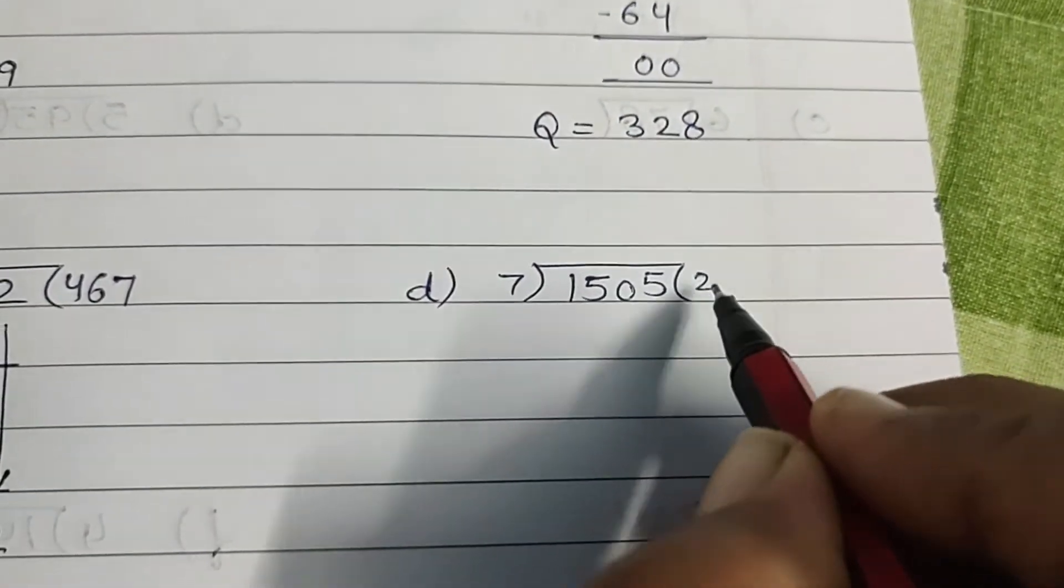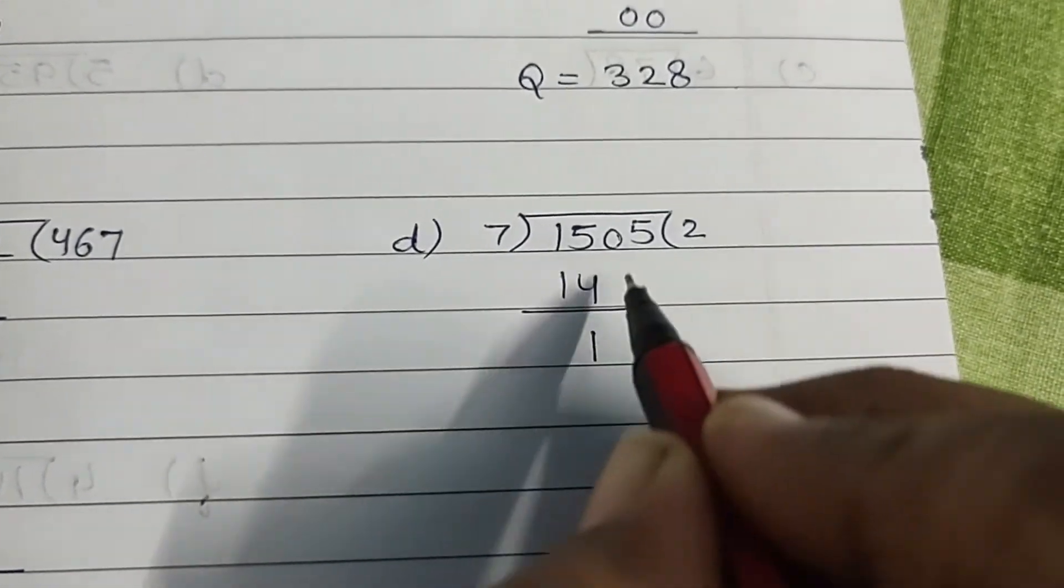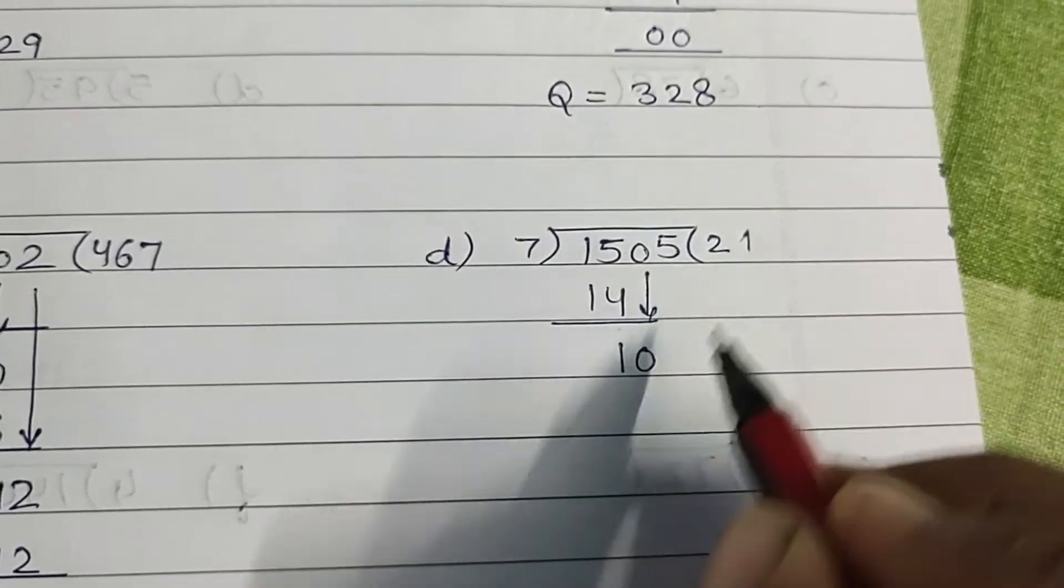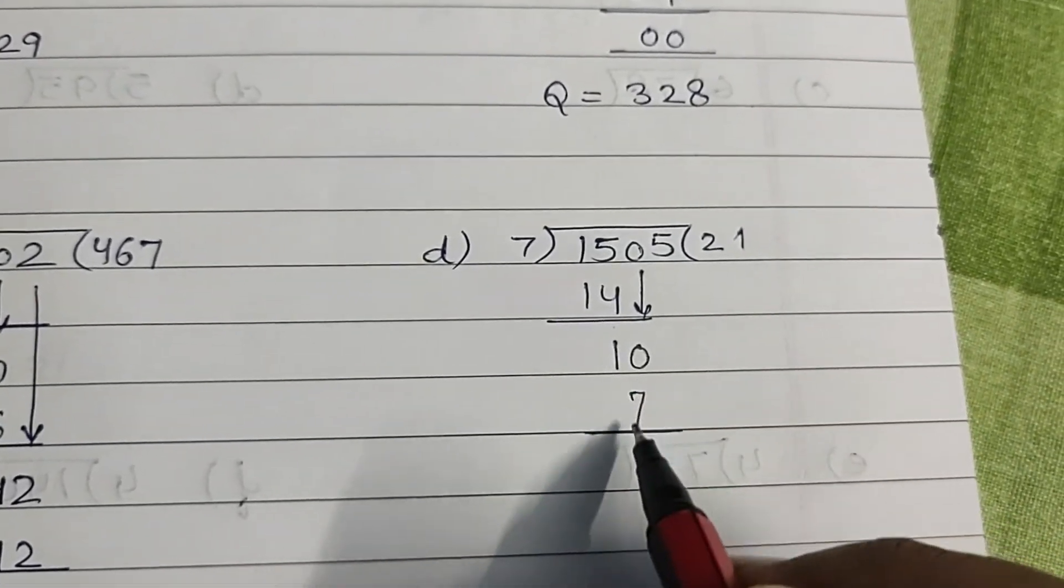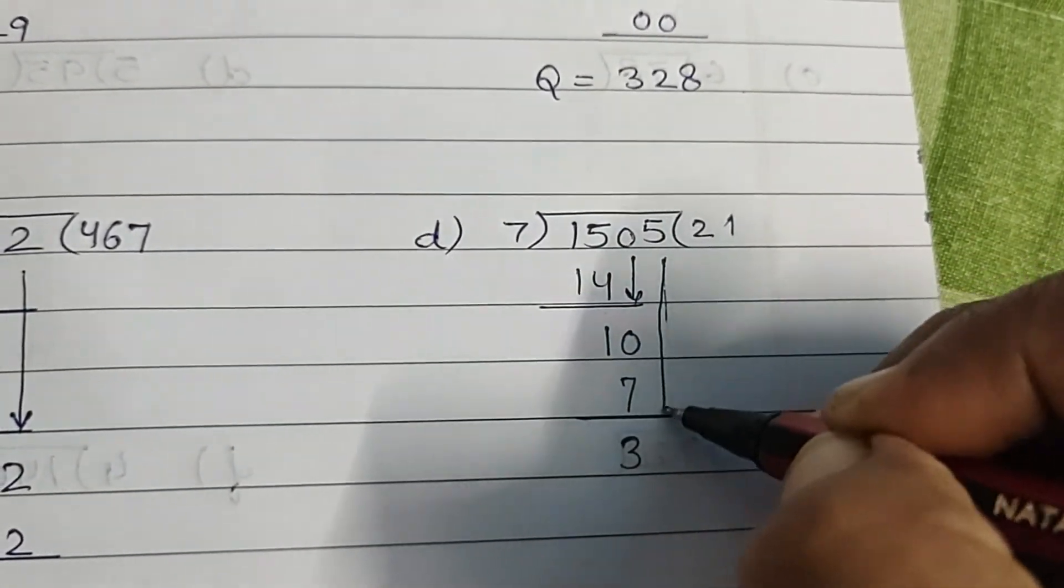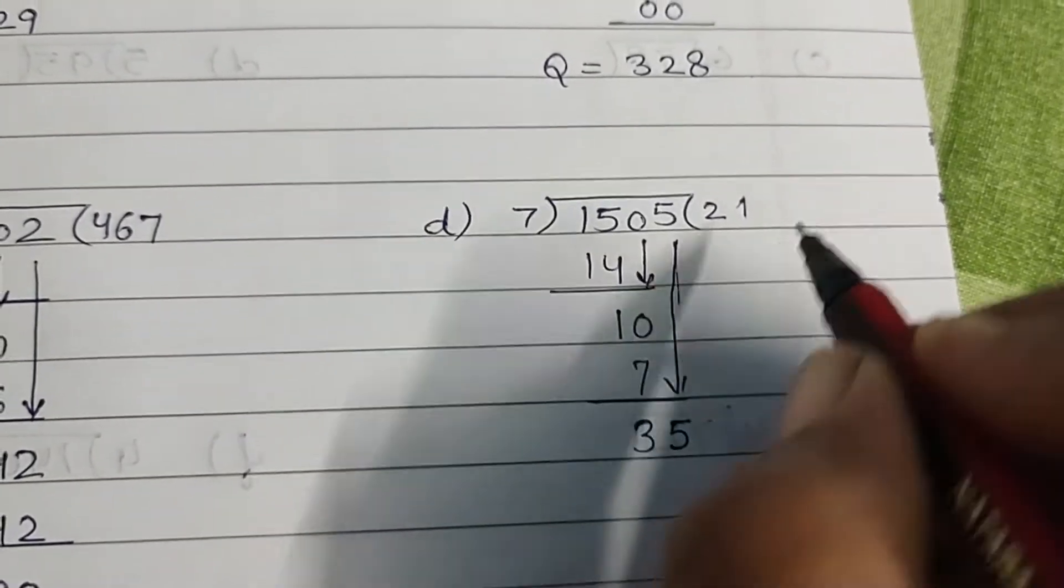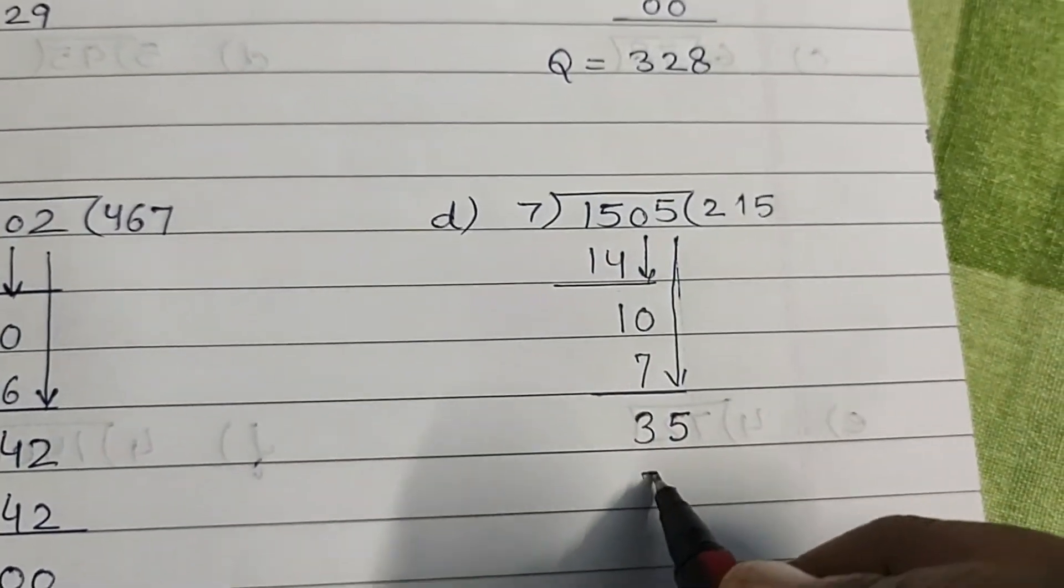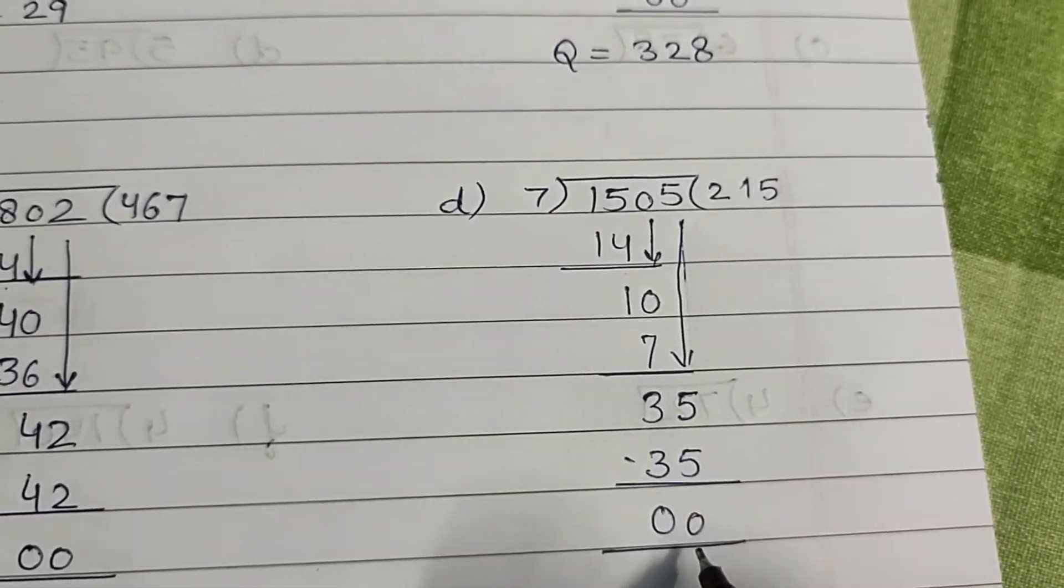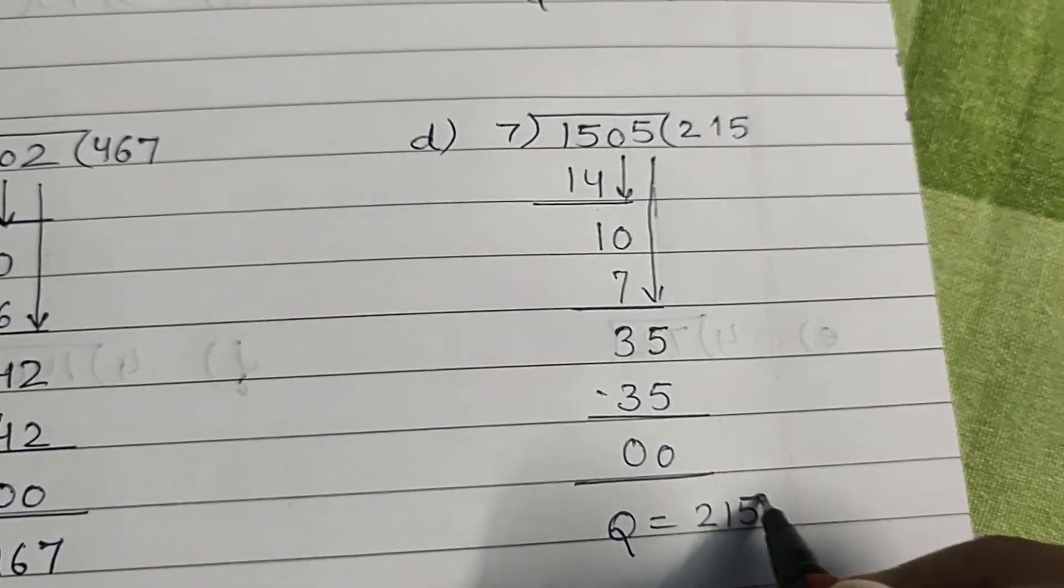Now 7, 2×7, 14. 15 minus 14, 1. Bring 0 down, 10. 7×1, 7. 10 minus 7, 3. Bring 5 down, ho gaya 35. 7×5, 35. 35 minus 35, 0. And quotient is 215.